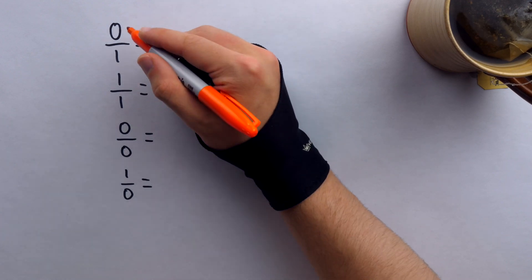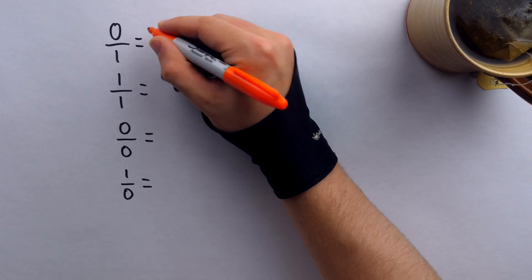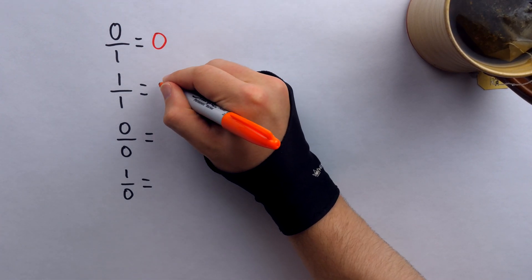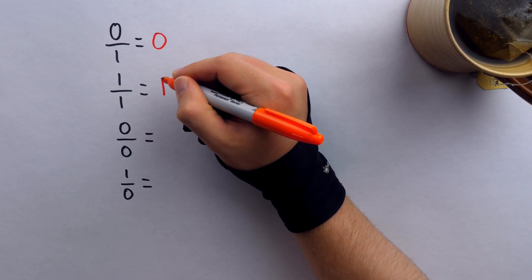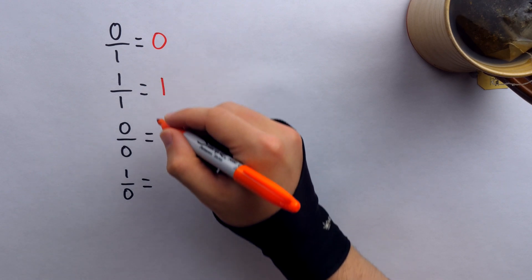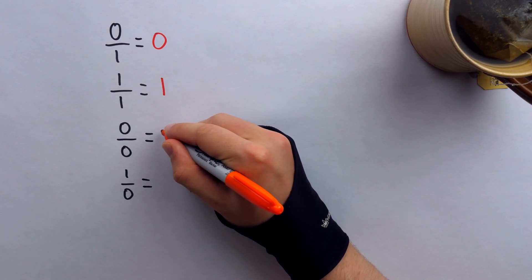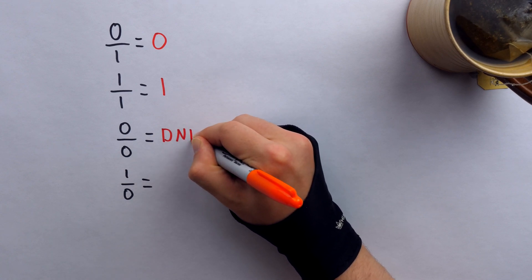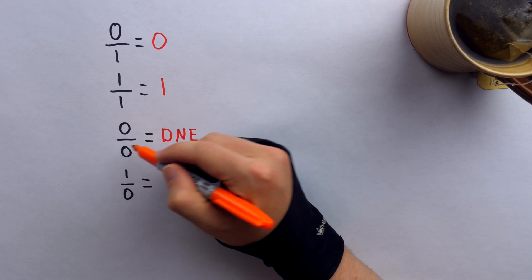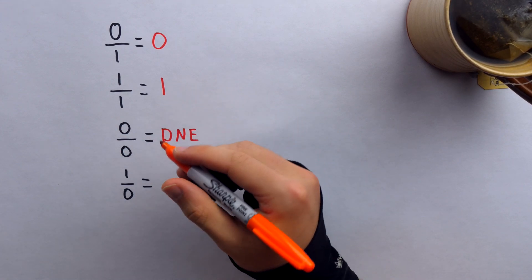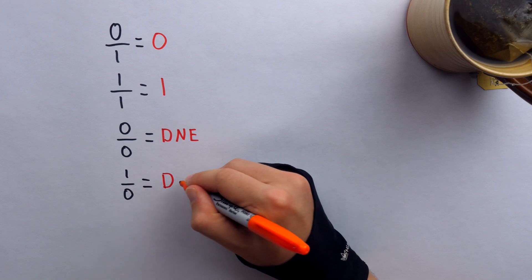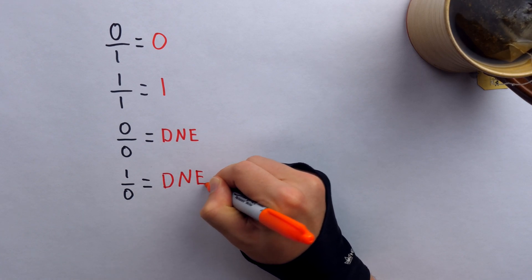Here are the answers: zero divided by one is zero. One divided by one is one. Zero divided by zero is not defined — we'll put DNE for 'does not exist.' There's not an answer to this. And one divided by zero is also not defined.